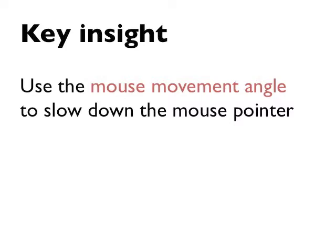A key insight of the Angle Mouse is to use the movement of the mouse, in particular the angular movement of the mouse, to slow down the mouse pointer only when the user is near their target.